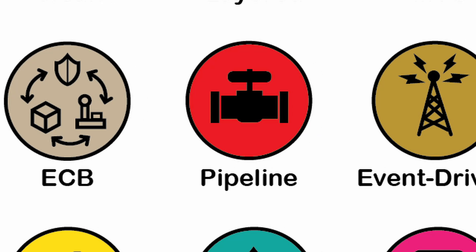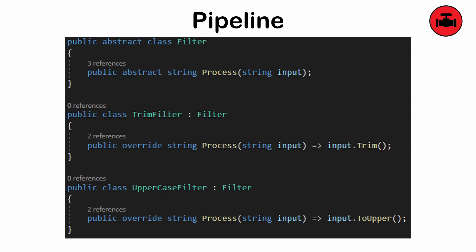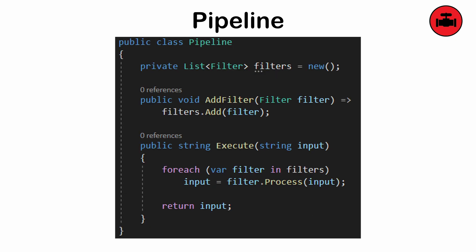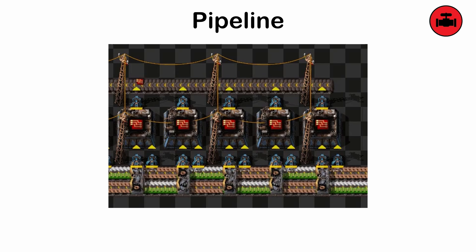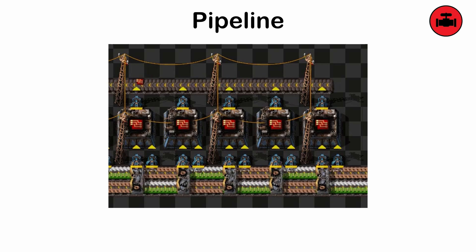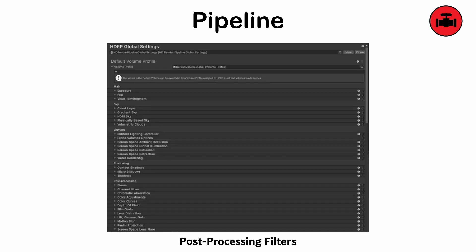The pipeline or filter pattern. An approach that processes data through a sequence of steps known as filters, where each step transforms the data before returning it. Picture an assembly line where a part or product travels down a conveyor belt, having elements added, modified, or removed along the way. Complexity scales with the number of steps in the pipeline.